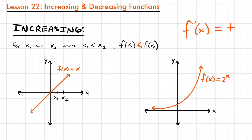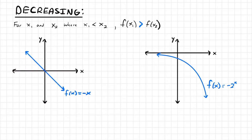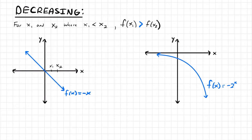For decreasing functions, the opposite is going to be true. If we pick two values of x where x1 is less than x2, the y value for x1 is going to be greater than the y value for x2. That's true for f of x equals negative x, where the slope is negative. The y value for x1 is higher than for x2, so the change between these points is negative — the slope is negative, so this function is decreasing.